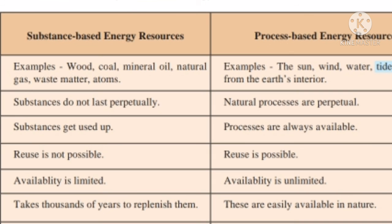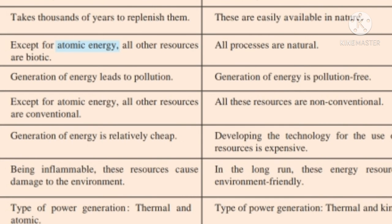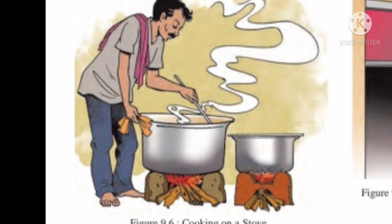Process-based energy resources imply the use of natural processes to generate energy — for example, sun, wind, water, tides, and heat from the earth's interior. These resources are unlimited and everlasting. Process-based resources can be reused and as they are easily available in nature, there is no problem of replenishment. All such resources are natural and non-conventional. Process-based resources generate energy without causing pollution and are environmentally friendly in the long run. However, the cost of developing the technology to use these resources for energy generation is high.